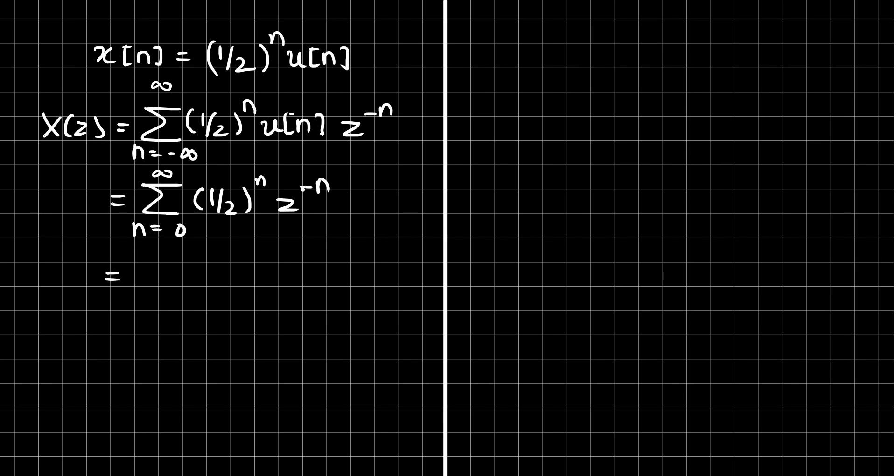Let us combine the terms. So we have summation n running from zero to infinity 1 by 2 times z inverse, whole to the power n.